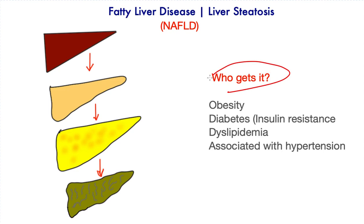So who is at risk from this condition? Those who are overweight, and specifically those with diabetes in whom insulin resistance is a factor, are at very high risk. Those with abnormalities of lipid or fat metabolism — called dyslipidemia or hyperlipidemias — and this condition is also frequently associated with high blood pressure.